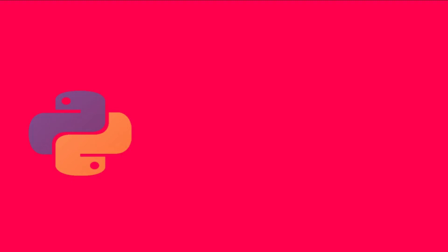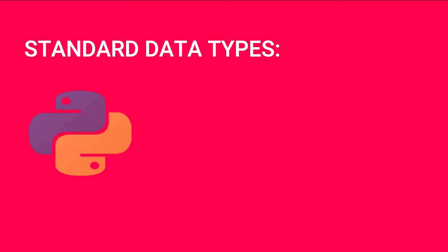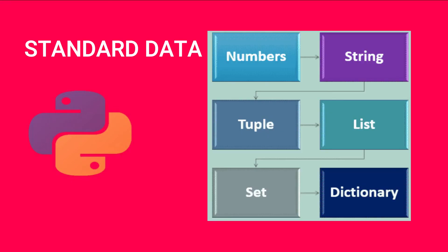In Python, there are some standard data types. For example, if we want to store a person's name, we use string. If we want to store an ID, we use integer. The standard data types in Python are: Numbers, Strings, List, Tuple, and Dictionary.